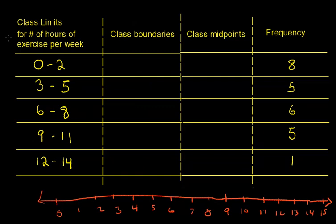What I've done with class limits thus far is, from 0 to 2, we've calculated that there are 8 observations between 0 and 2. And then from 3 to 5, we've calculated that there's 5 observations between 3 and 5, 6 to 8, 9 to 11, 12 to 14.